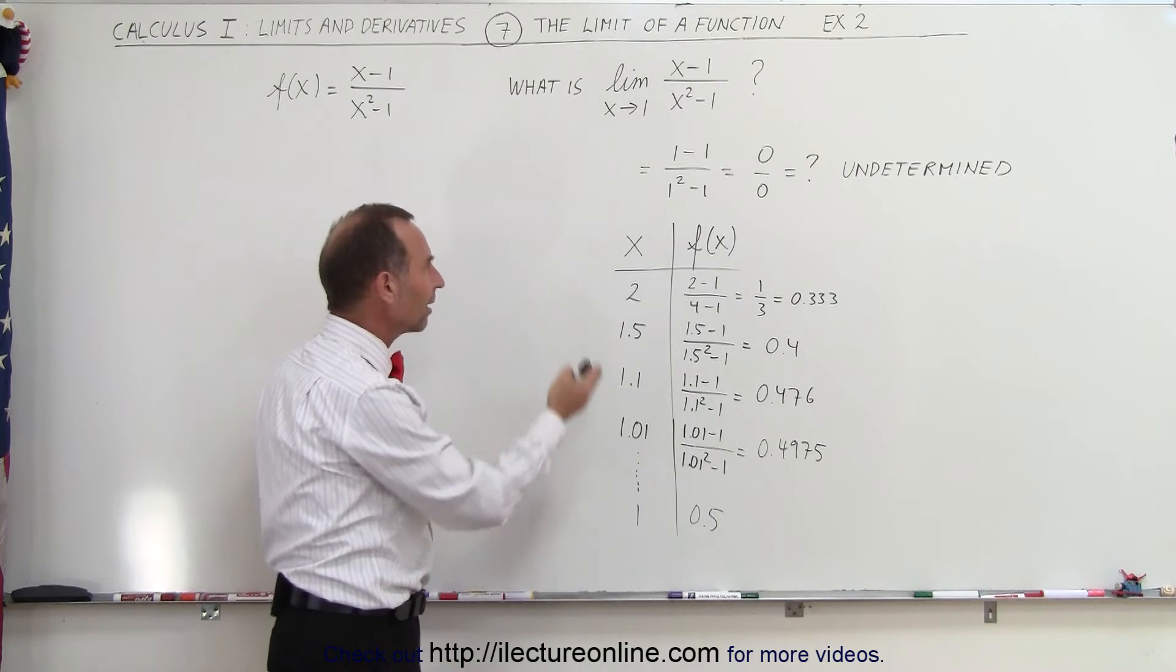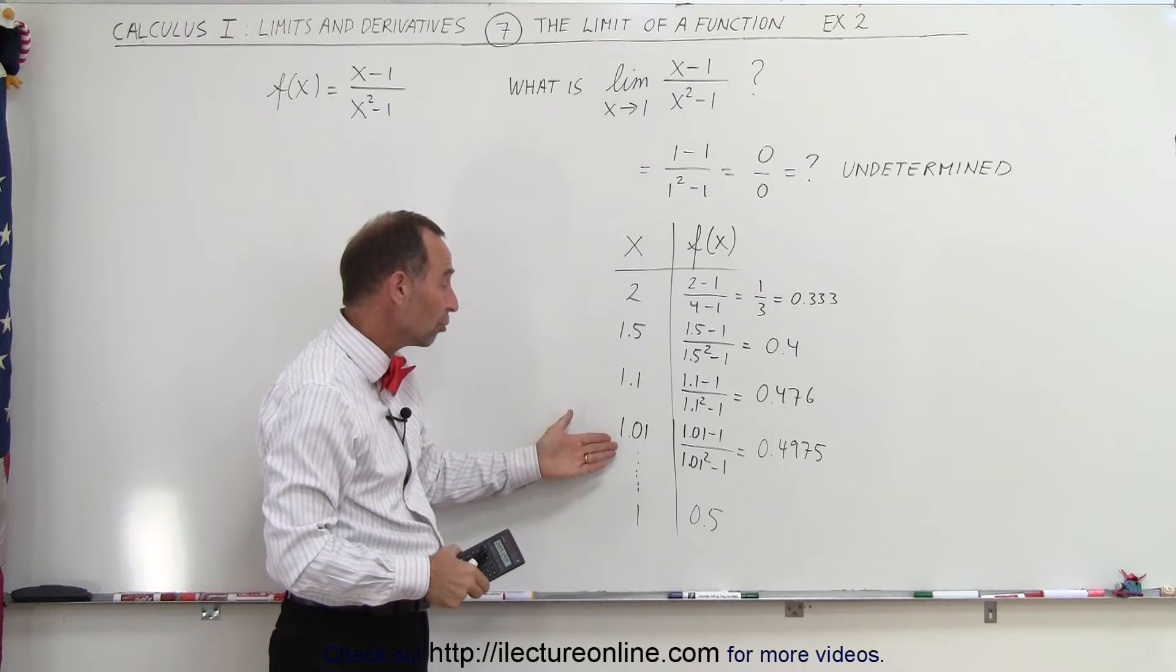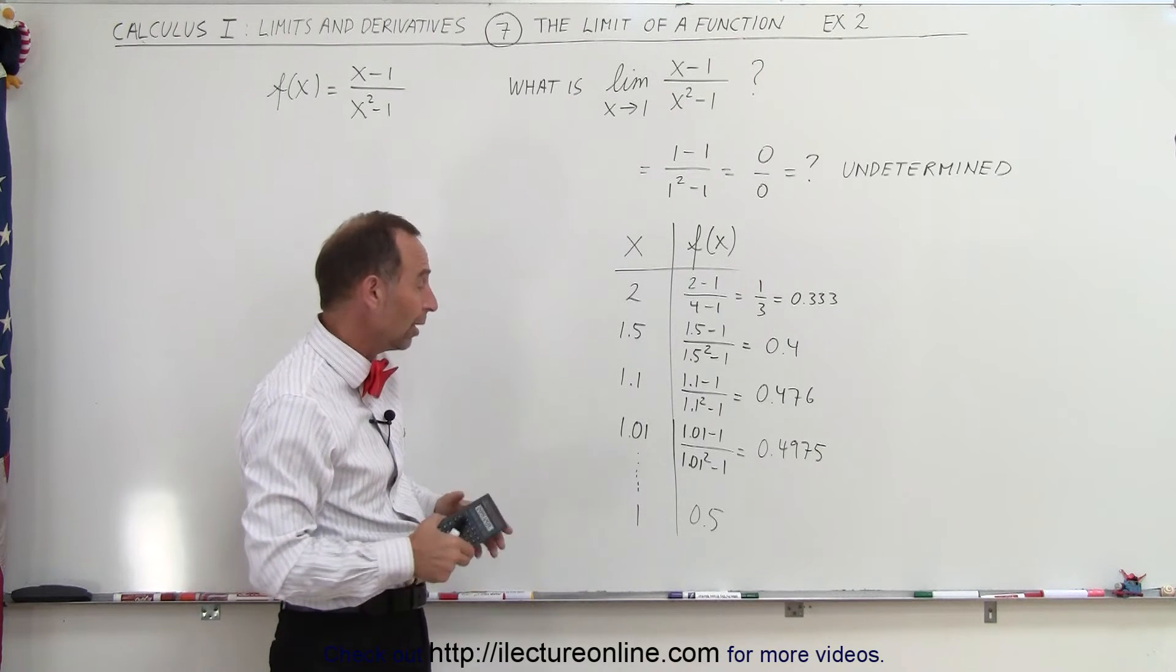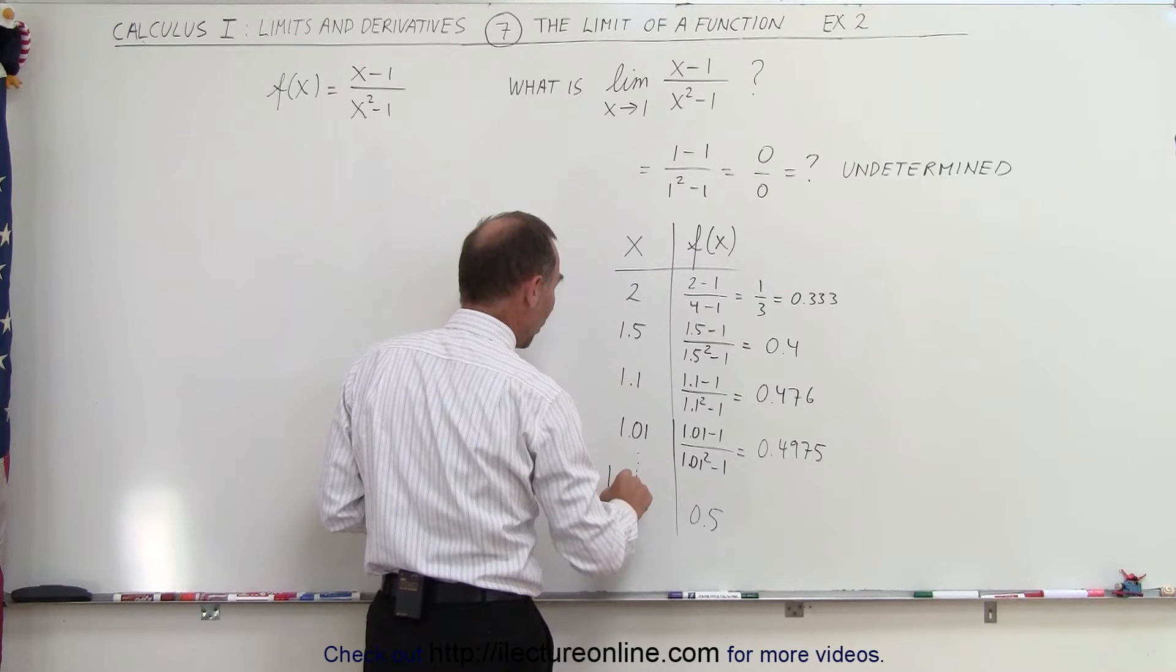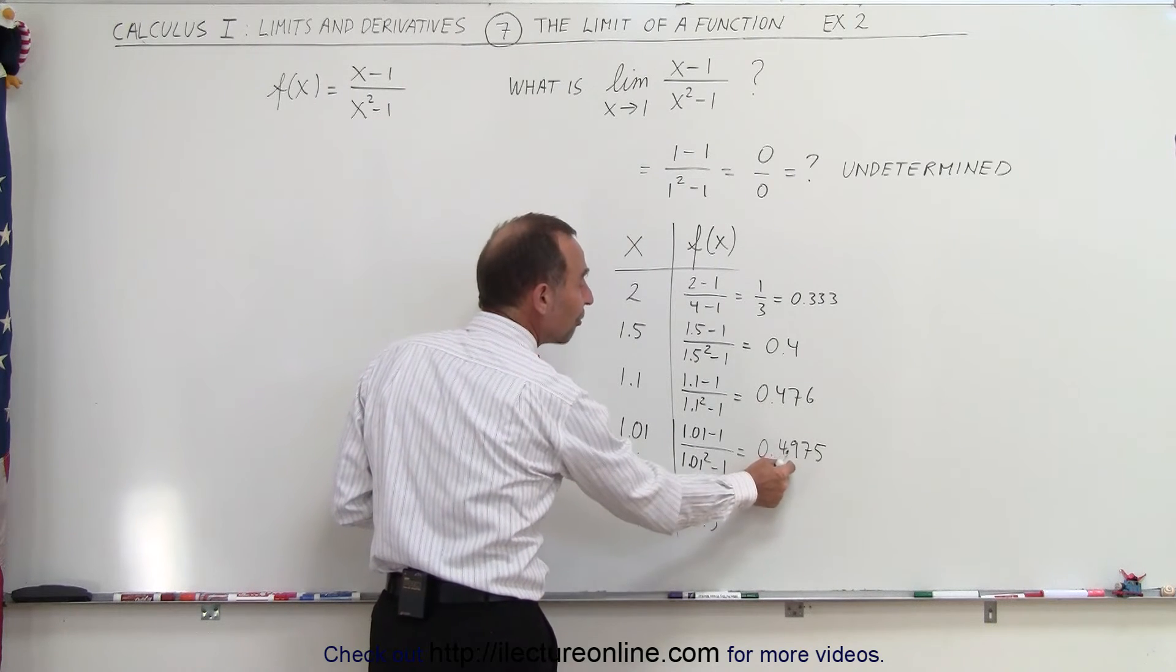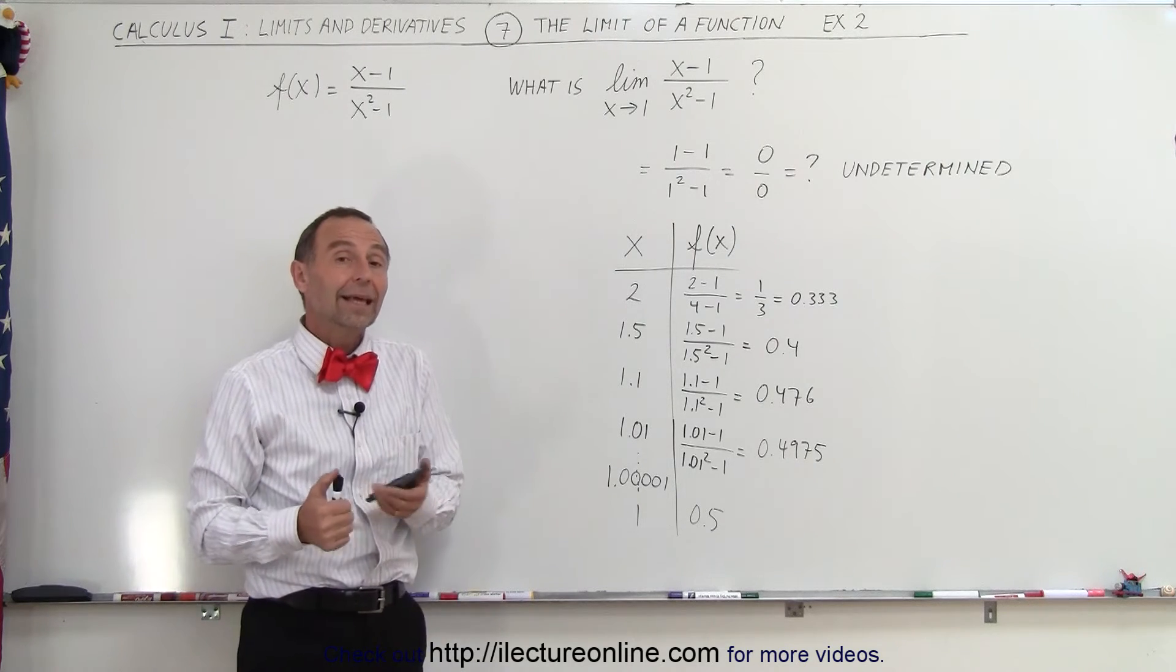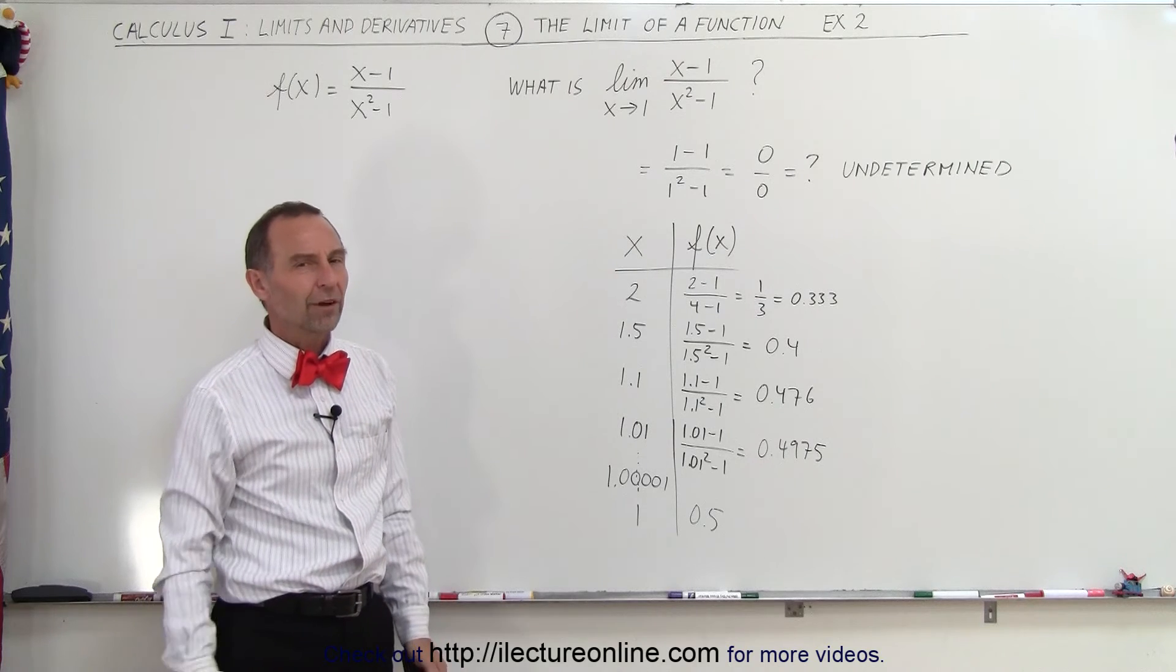So how do you show that the limit actually is 0.5? Of course, what we can do is we can take the number smaller and smaller, we can make the number get closer and closer and closer to the value of 1. For example, what if we take a calculator and we plug in the value of 1.00001 like that, and you'll see that when you do that, you get a value very close to 0.5, which would indicate that in the limit as x does approach 1, it should equal 0.5.